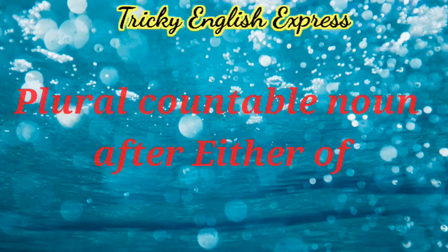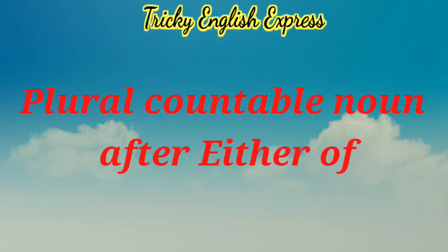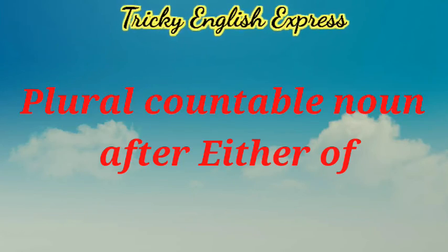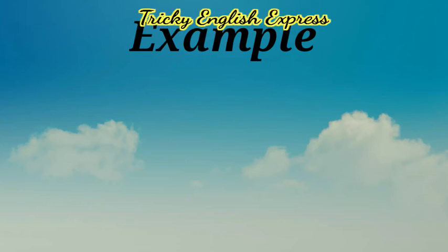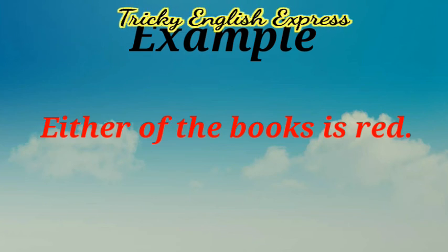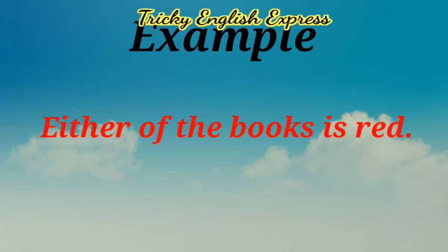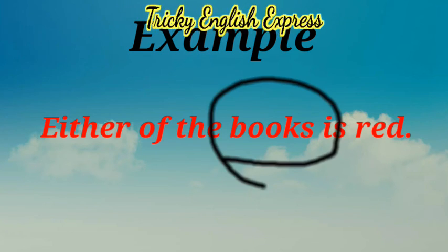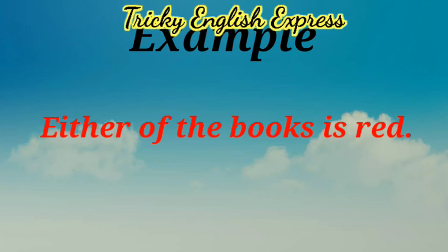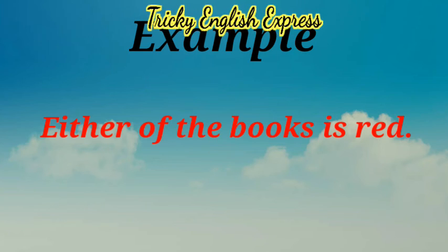After 'either of', we use a plural countable noun. For example: 'Either of the books is dead.' Here 'books' is the plural countable noun used after 'either of'.